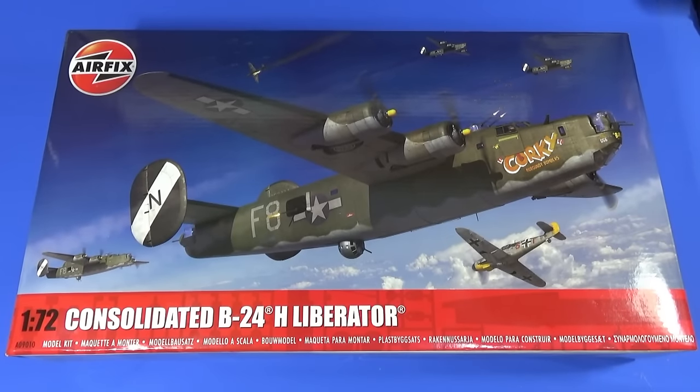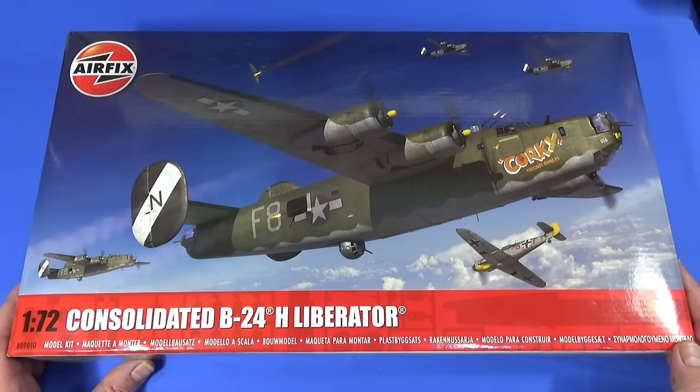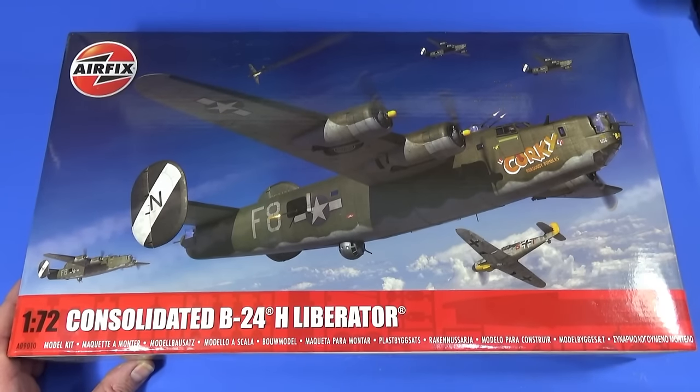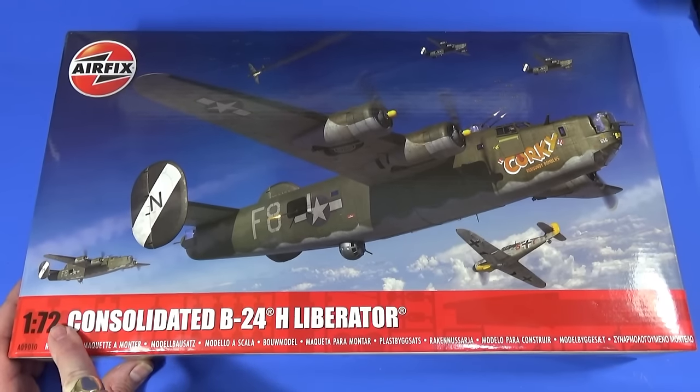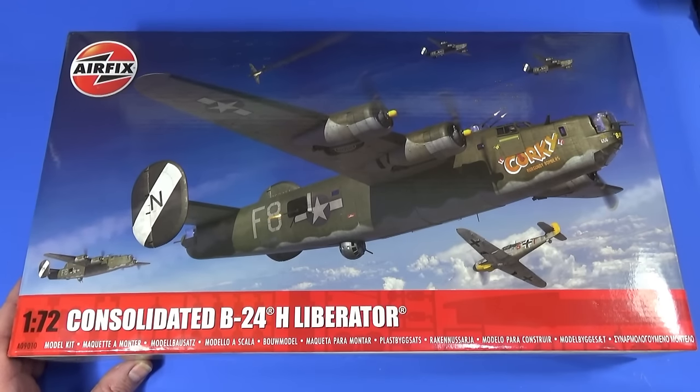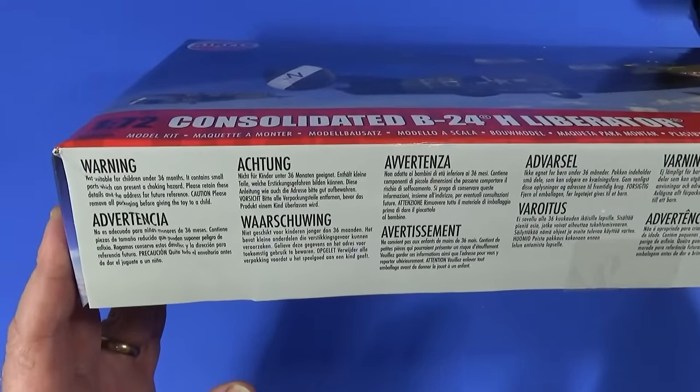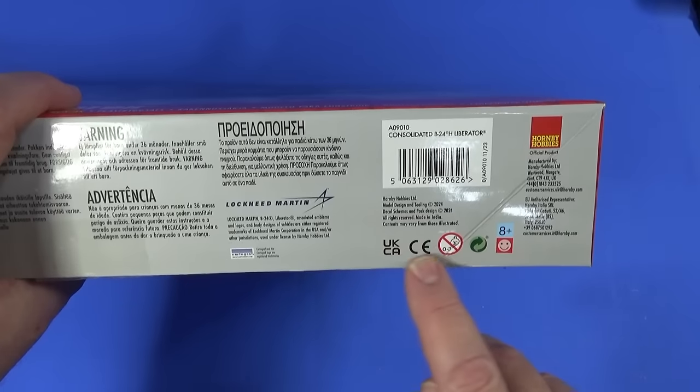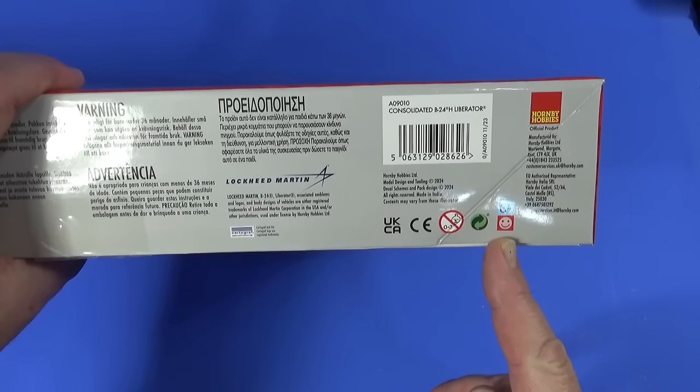So let's make a start and have a look what you get inside the box of the Consolidated B-24 Liberator in 1/72nd scale from Airfix. Here's the front box art, Adam Tooby's wonderful work. This is the lead scheme of the kit. It says here Consolidated B-24H Liberator, 1/72nd scale, product code A09010, which means it's a series 9 kit.